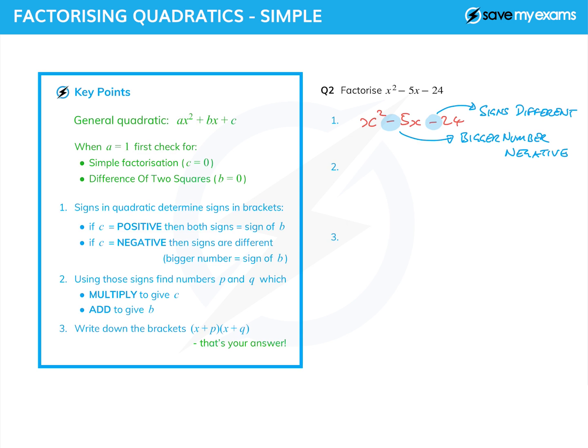Now we look for two numbers which multiply together to give c, that's -24, and add together to give -5. We want the bigger number negative, so let's start very logically: 1 × -24, 2 × -12, they add together to give -10.